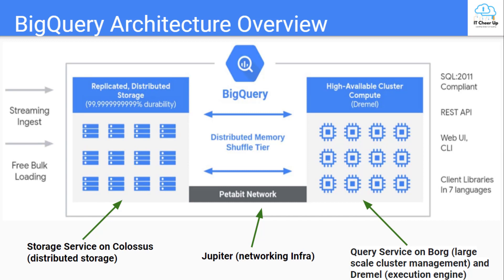This architecture is different from traditional node-based cloud data warehouse solutions or massively parallel processing systems. BigQuery runs data processing jobs that can load, export, copy, or query data. BigQuery has two services — a storage service and a query service — that are connected by Google's high-speed Jupiter networking infrastructure.